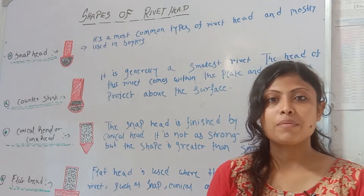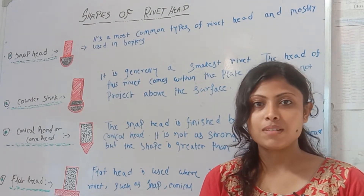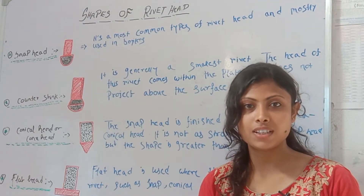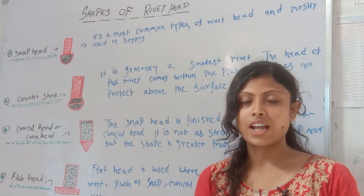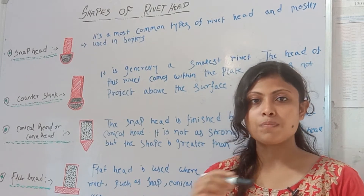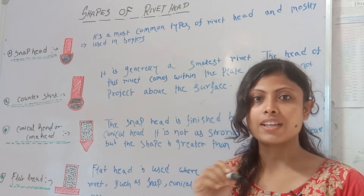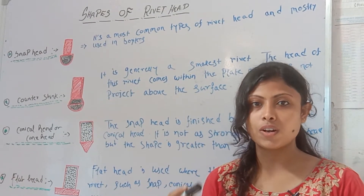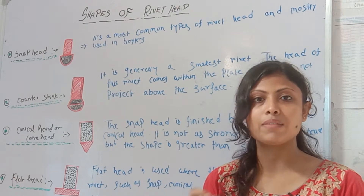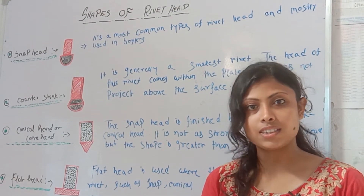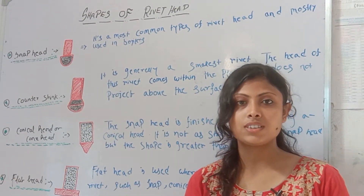Today we have seen rivet joint. What type of rivet joint? The rivet joint is a same metal joint. This is the same rivet joint.